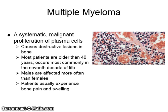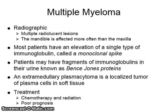Multiple myeloma is a systemic malignant proliferation of plasma cells. It causes destructive lesions in bone. Most patients are over 40, and it occurs most commonly in the seventh decade of life. Males are affected more often than females. Patients usually experience bone pain and swelling. Radiographically, it shows multiple radiolucent lesions, and the mandible is affected more often than the maxilla.